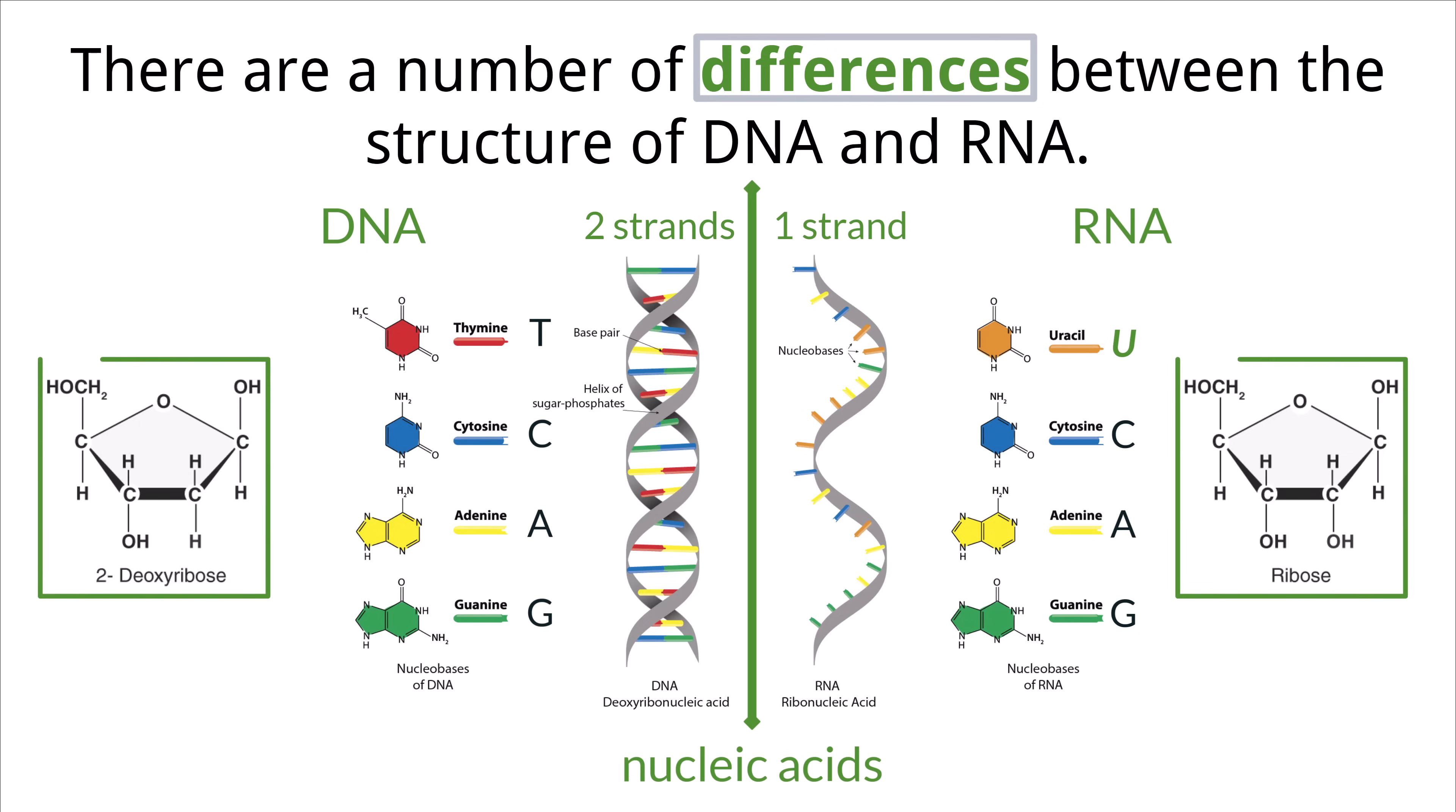Lastly, the pentose sugars of each structure are slightly different, which is indicated by the actual name of each compound. DNA, or deoxyribonucleic acid, has a deoxyribose sugar, which lacks an oxygen stemming from the second carbon, meaning there is only a hydrogen atom connected to it. Hence the deoxy part of the name. RNA, or ribonucleic acid, contains ribose sugar, which does have the hydroxyl group with the oxygen present. Other than that one difference, the rest of the sugar components are the same.